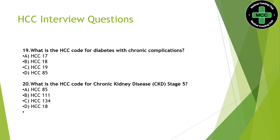Next question: What is the HCC code for diabetes with chronic complications? You should be aware of common HCC conditions. The HCC code for diabetes with chronic complications is HCC 80. Next question: What is the HCC code for chronic kidney disease stage 5? The answer is option C — HCC 134.